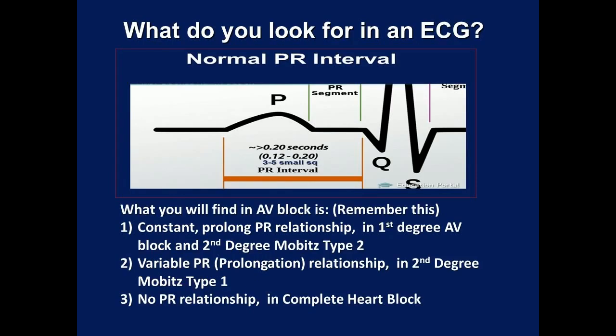What do you look for in an ECG in a patient suspected of heart block? Look at the PR interval. Normal PR interval is 0.12 to 0.20 seconds, or 3 to 5 small squares.